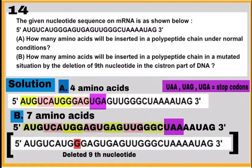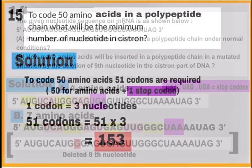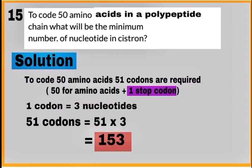Question 15: Calculate the number of nucleotides required to code 50 amino acids in a polypeptide chain. To code 50 amino acids, 51 codons are required—50 for amino acids and 1 stop codon. As you know, 1 codon equals 3 nucleotides, so 51 codons equals 51 times 3, meaning 153 nucleotides are required.